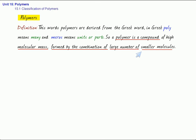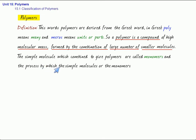The simple molecules, which combine to give polymers, are called monomers. And the process by which the simple molecules or the monomers are converted into polymers is called polymerization. So, here we have to understand the meaning of three terms: polymers, monomers, and polymerization.